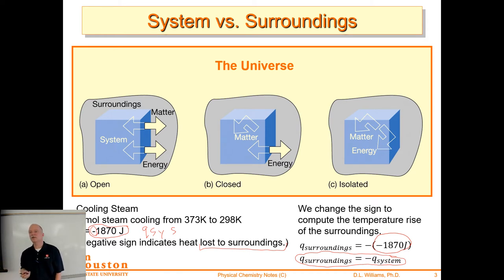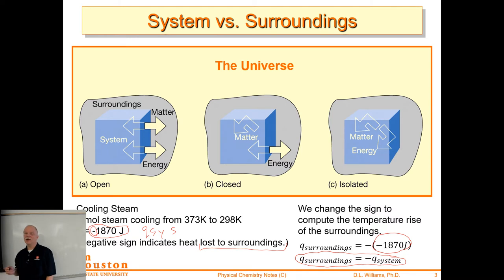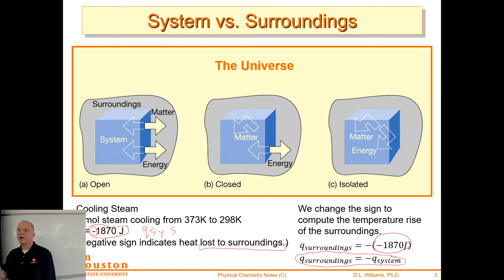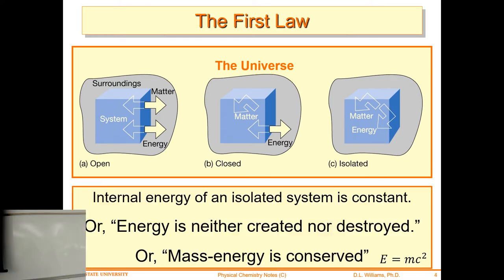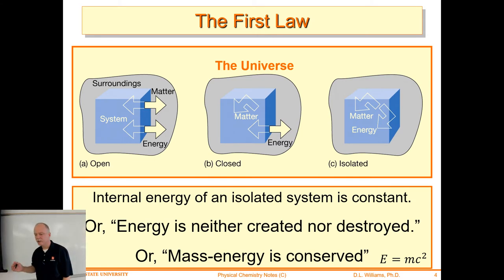We'll do a very simple exercise — mixing hot and cold water and trying to predict the final temperature, keeping track of where all the joules went. We'll become better accountants this semester in tracking our joules because it's really just accounting — joules flowed out of the water into the cup, out into steam, into the thermometer, and so on.